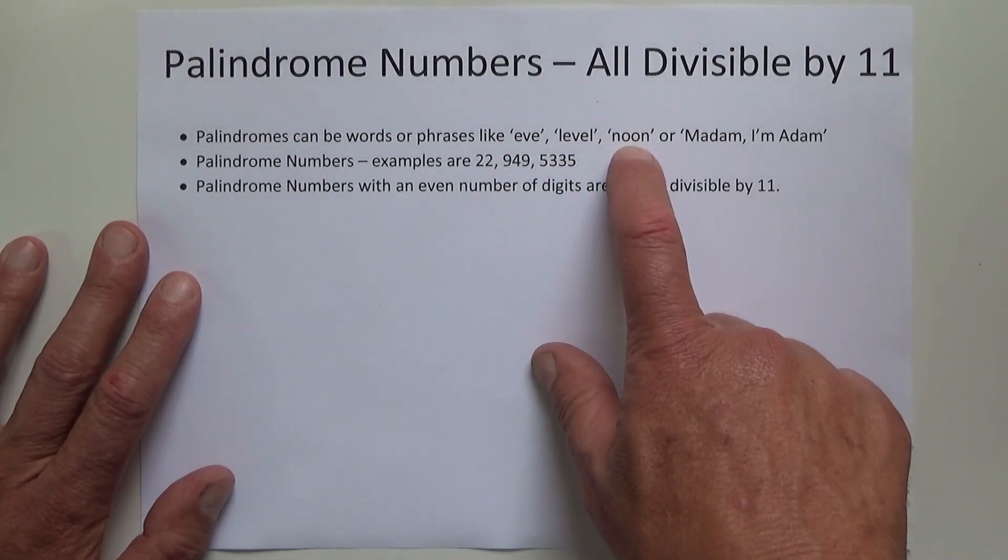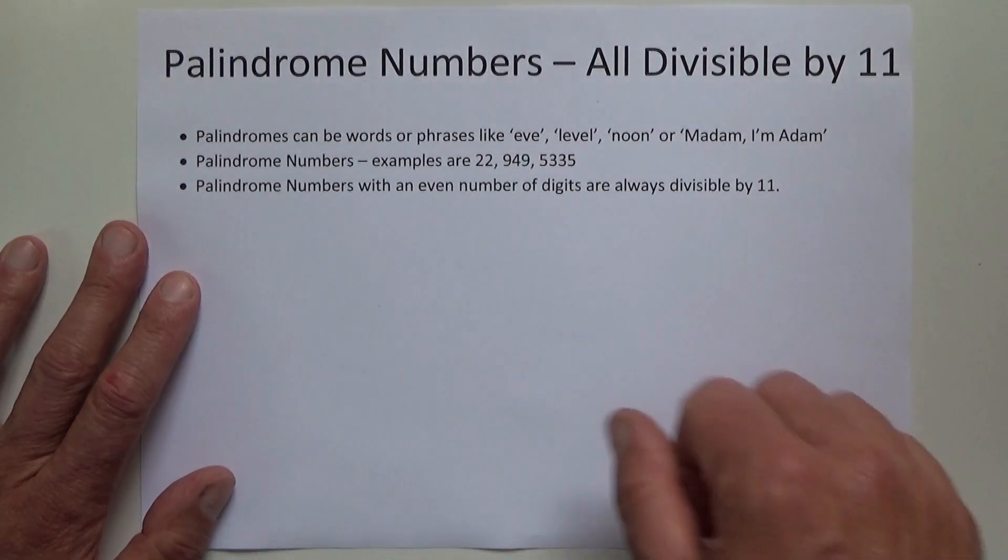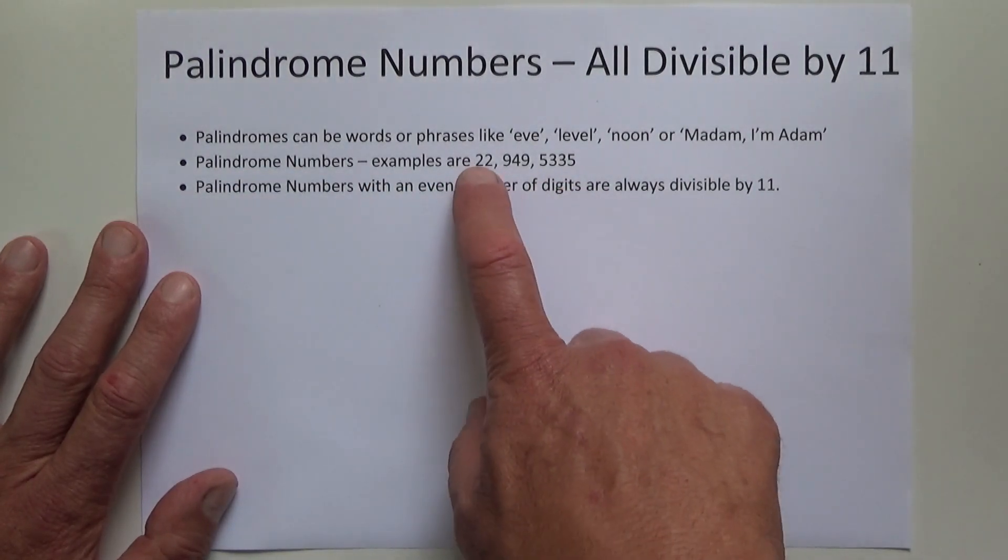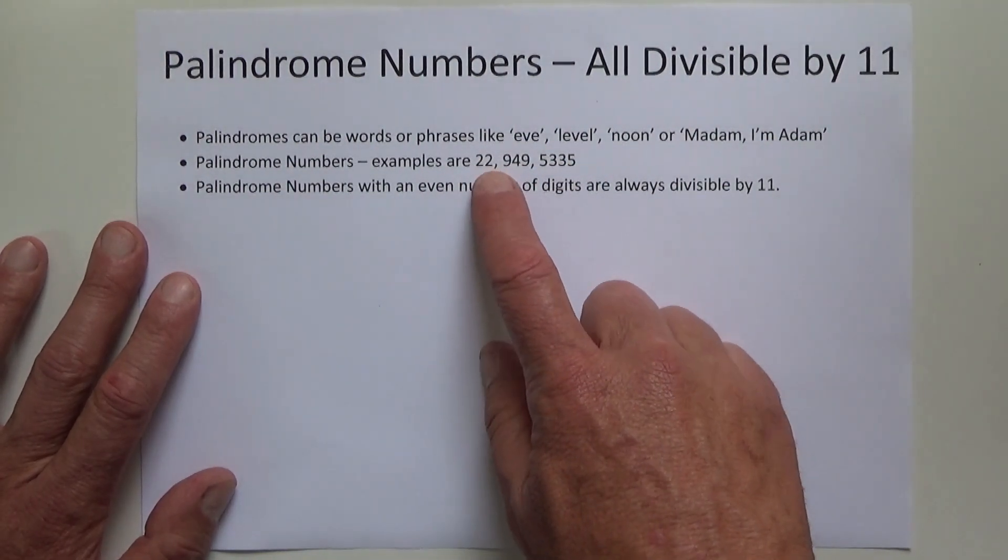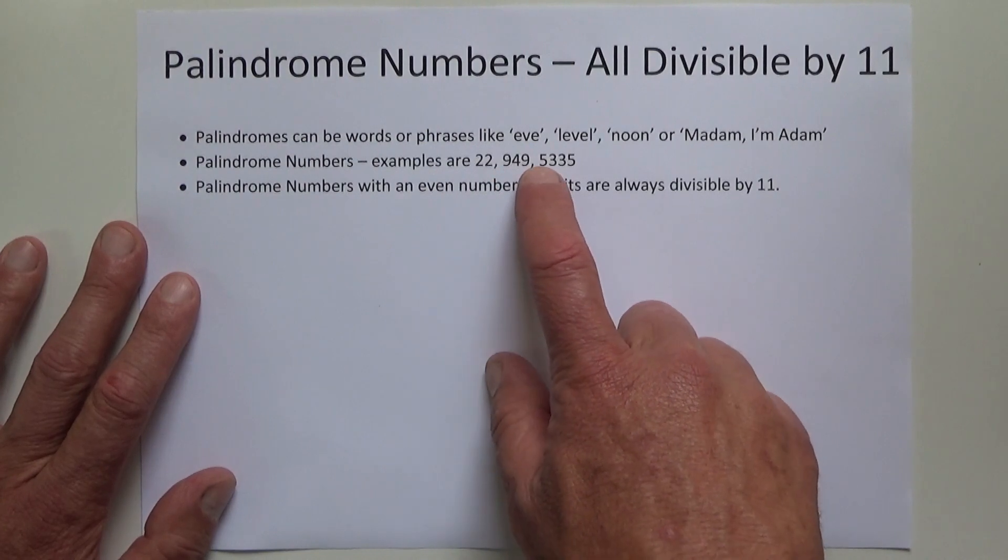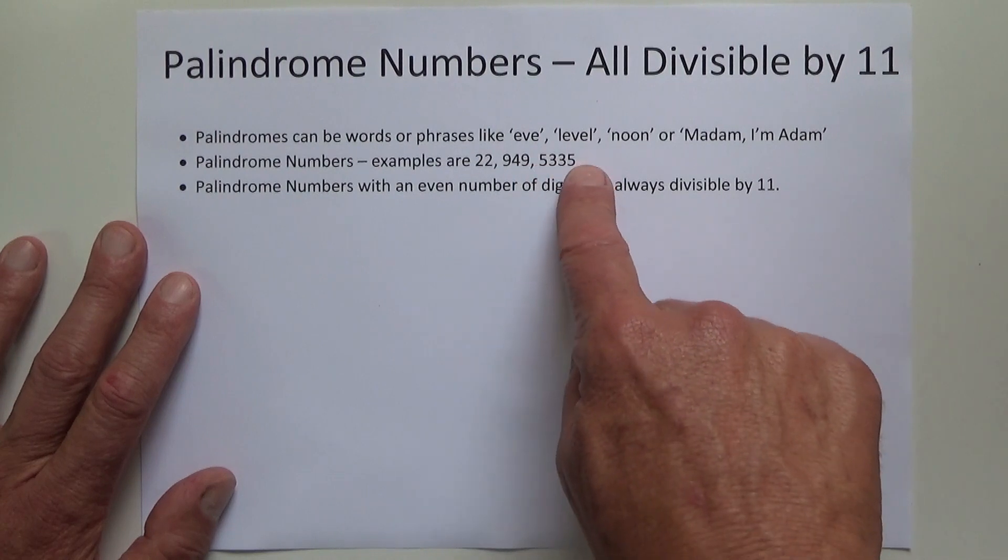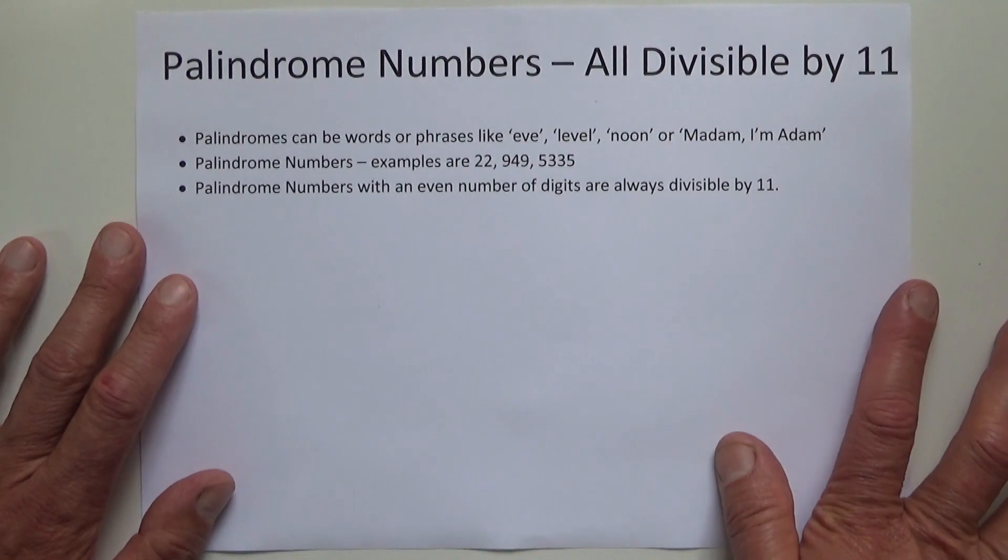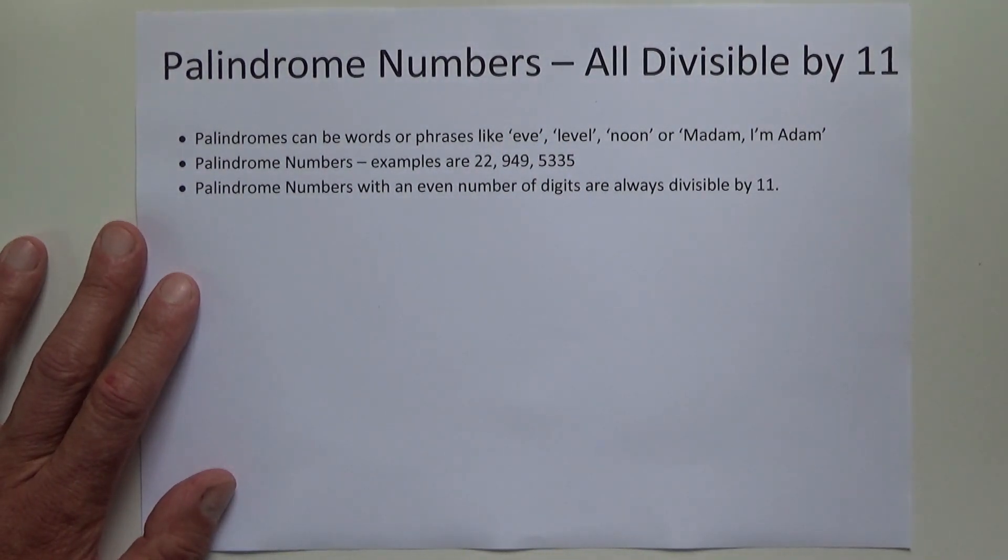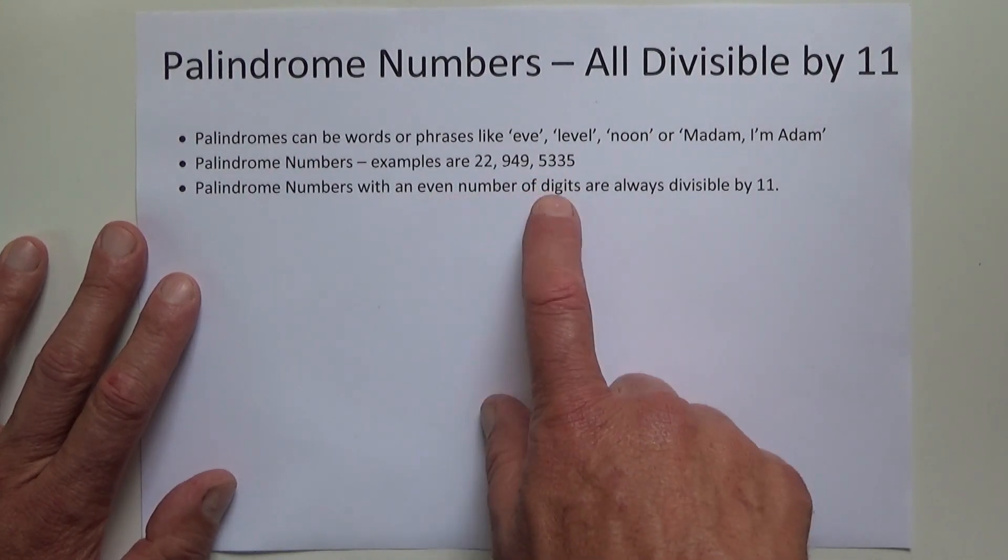Palindrome numbers are the same thing where you read them from left to right or right to left and they read the same way, such as 22, 949, or 5335. So 5335 reading it left to right and then right to left is still 5335. This is an interesting fact: if you divide a palindrome number with an even number of digits, it's always divisible by 11.